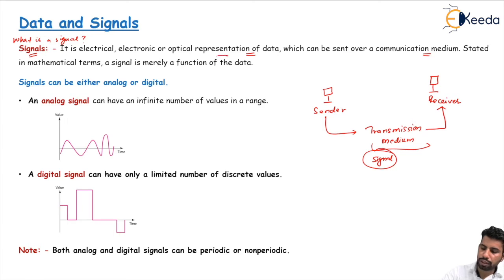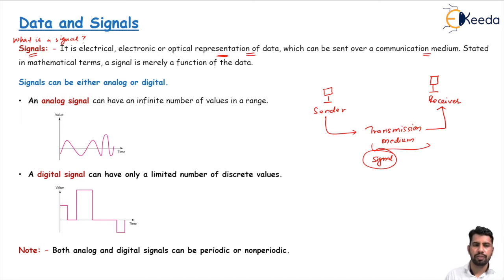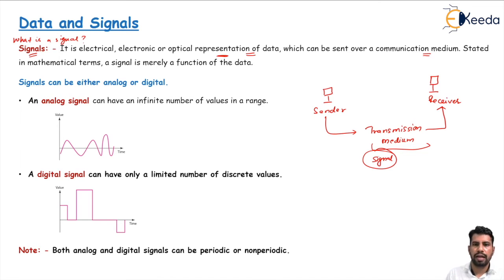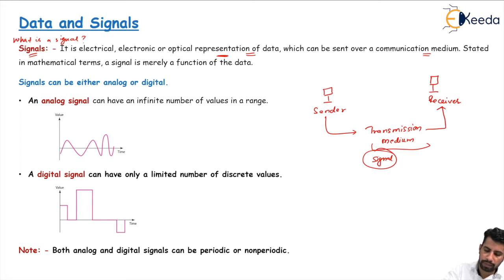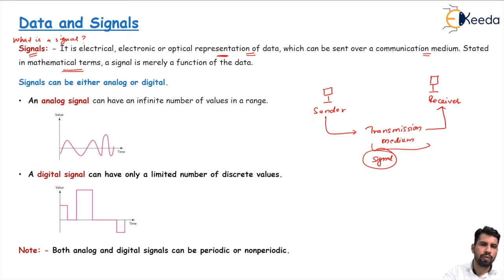The signal is the representation of our data, because transmission media do not carry bits — they carry signals. So we need a representation of data that can be transmitted from one place to another, and that form is the signal. Signals may be in electrical form or optical form. We can say that signals are mathematical representations so that we can present data in the form of signals.